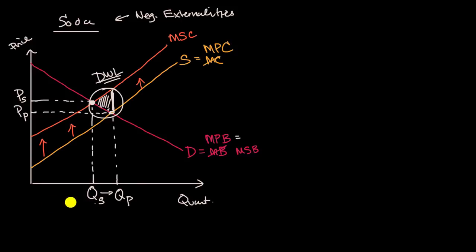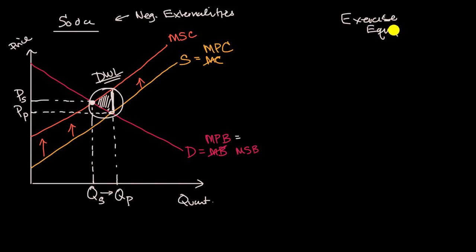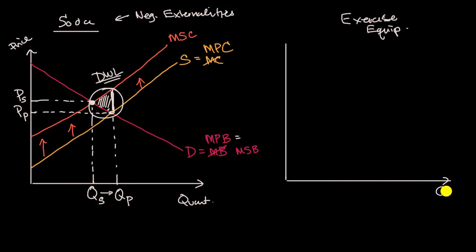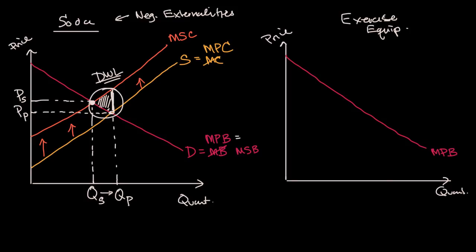Now we can also think about a scenario with positive externalities. Let's imagine the exercise equipment market. We could draw similar curves — quantity on one axis, price on the other. We have our marginal private benefit curve, which would be our demand curve, and our marginal private cost curve. If we just let this market operate thinking about private cost and benefit, we would produce that quantity at that price.